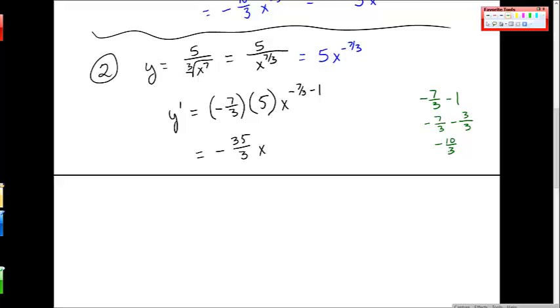So I get something that looks like this. So then over here, that's my new exponent, negative 10 thirds.